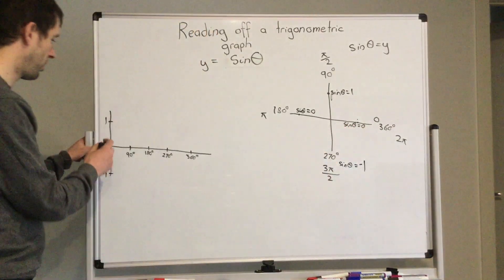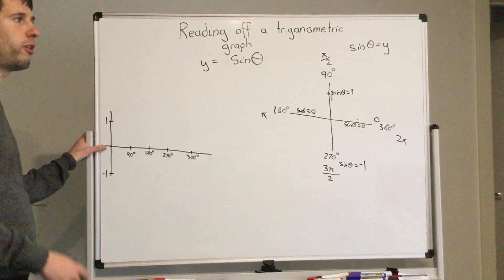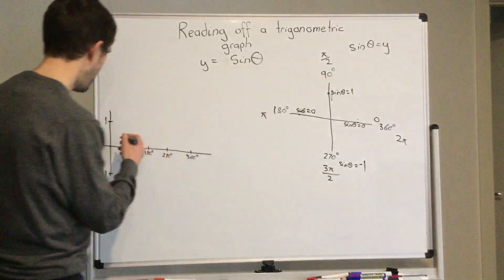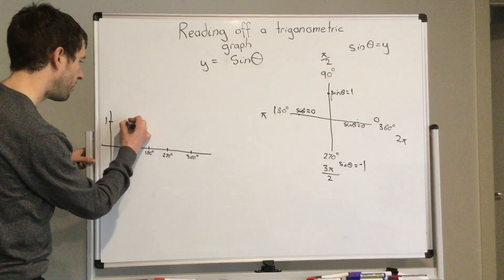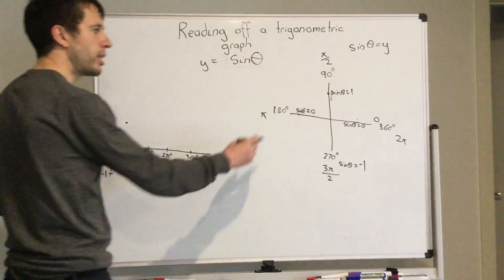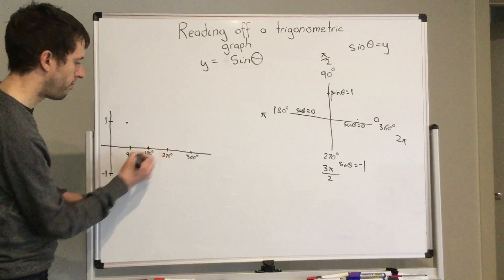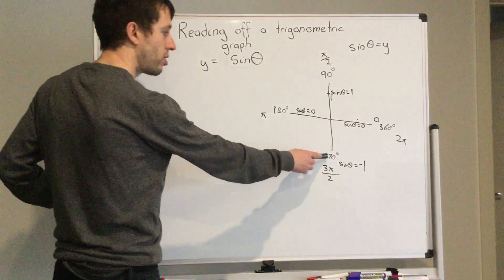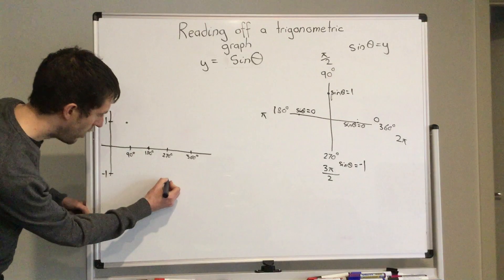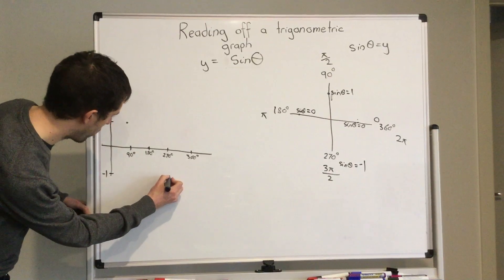We are at zero degrees, at zero. As soon as we get to 90 degrees, our sine is one. As soon as we get to 180 degrees, our sine is back to zero, so on the x-axis. And then at 270 degrees we get to negative one.